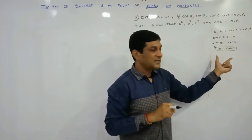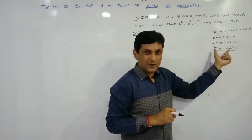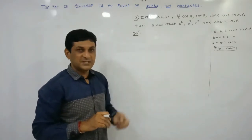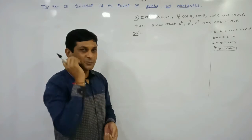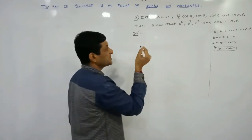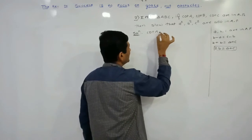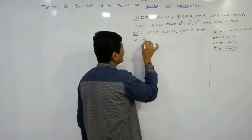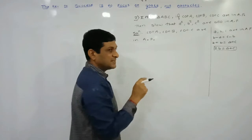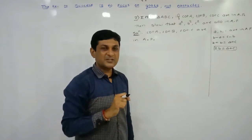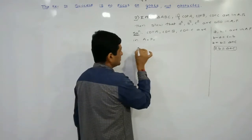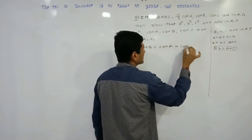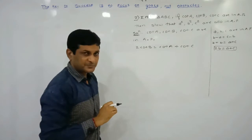So if this condition 2b = a + c is satisfied, we can say the terms are in arithmetic progression, and conversely if terms are in AP this equation is satisfied. Using this result, we now solve our example. Since cot A, cot B, cot C are in AP, the condition that is satisfied is: 2·cot B = cot A + cot C — let us denote this as equation number one.